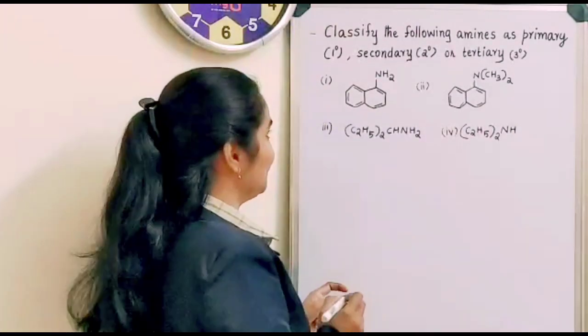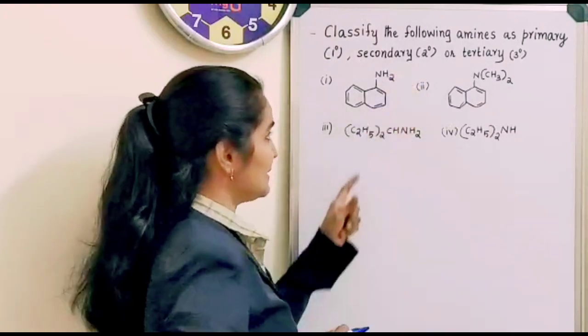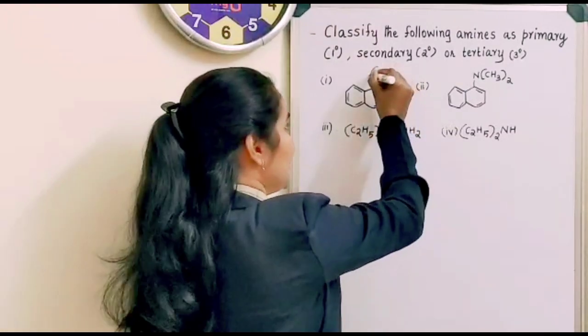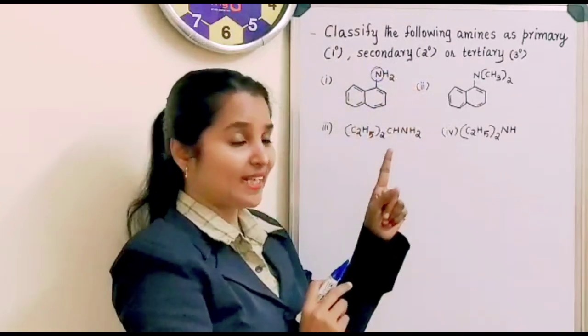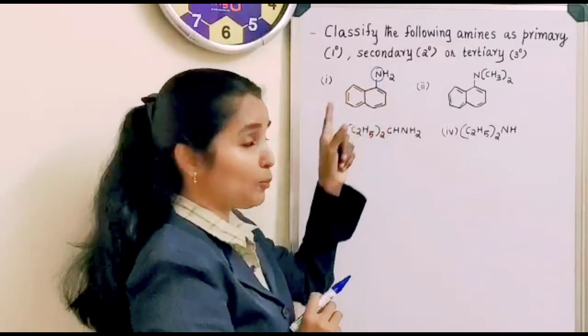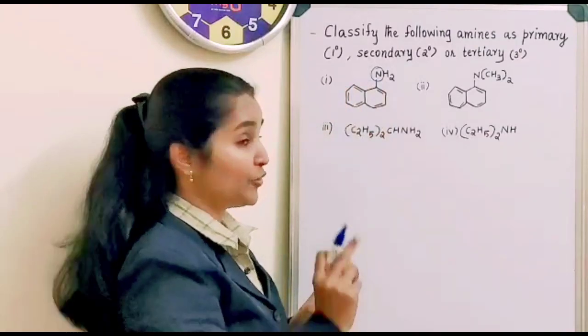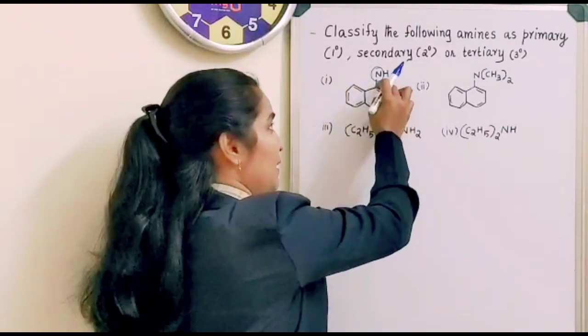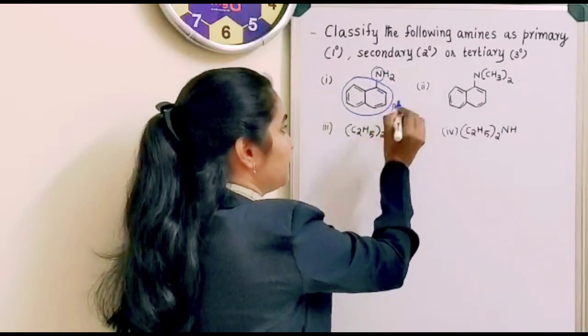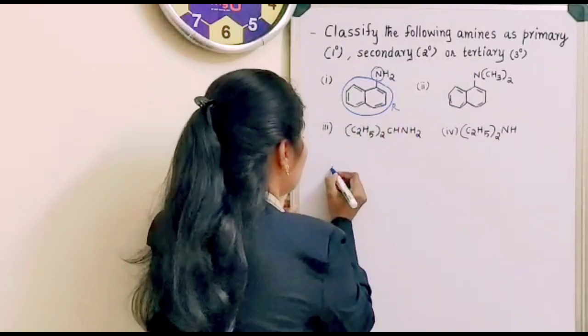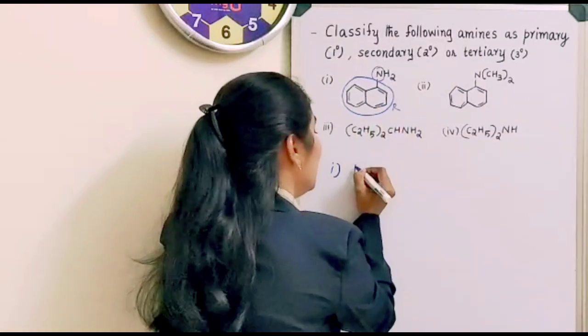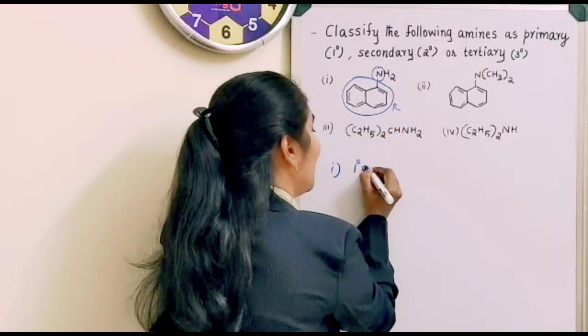So we will see the first one. This is the compound. And where you have to look at? You have to look at nitrogen. How many hydrogen are bonded to nitrogen here? Two. When two hydrogen atoms are bonded and this is one R, only one R is here. And so, first is going to be what type of amine? That is a primary amine.